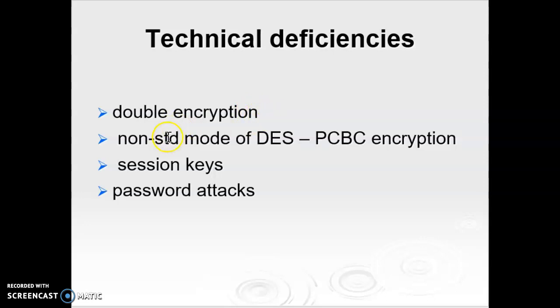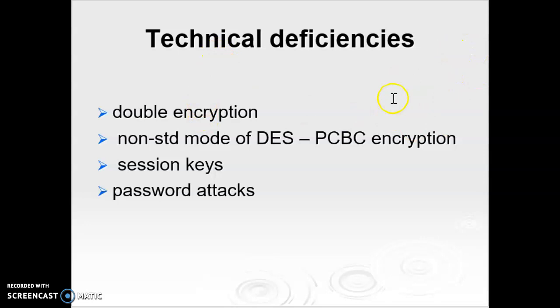The second technical deficiency is PCBC encryption. Version 4 uses a non-standard mode of DES called PCBC (Propagating Cipher Block Chaining), which has been demonstrated to be vulnerable to an attack. Therefore, PCBC should not be used. Version 5 provides explicit integrity mechanisms using standard CBC mode for encryption.